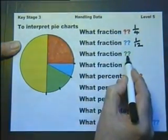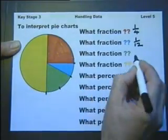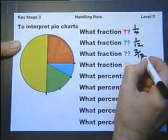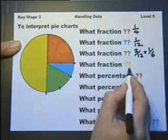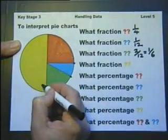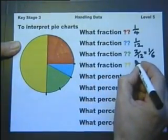What fraction is colored in green? Well if that's 1 twelfth, that must be 2 twelfths, which will cancel to a sixth. What fraction is colored in that rather horrible looking yellow? That's a half.